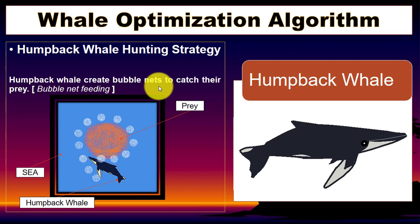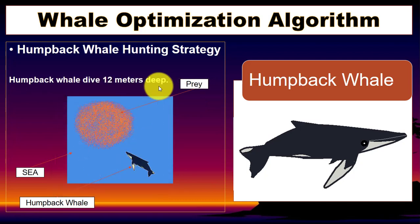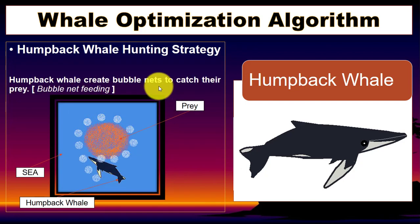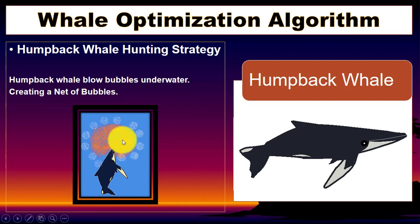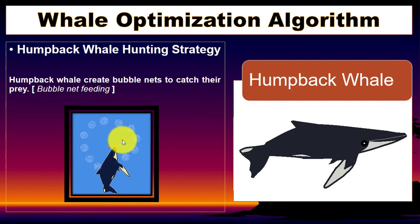This is the hunting strategy used by the humpback whale to capture prey. First they find the target, then they dive 12 meters deep, and then they create a bubble net around the target. The humpback whale blows bubbles underwater, creating a net of bubbles around the target. As you can see, the target is now captured. This is the simple strategy used by the humpback whale.